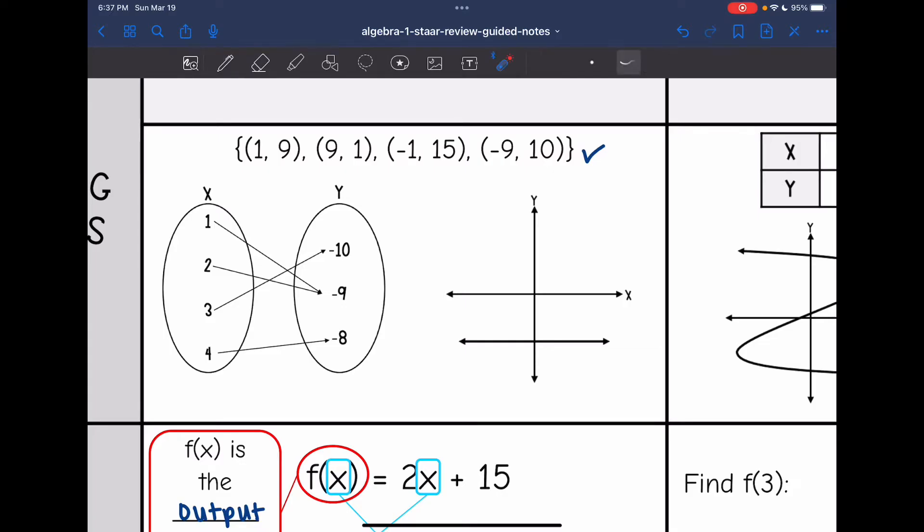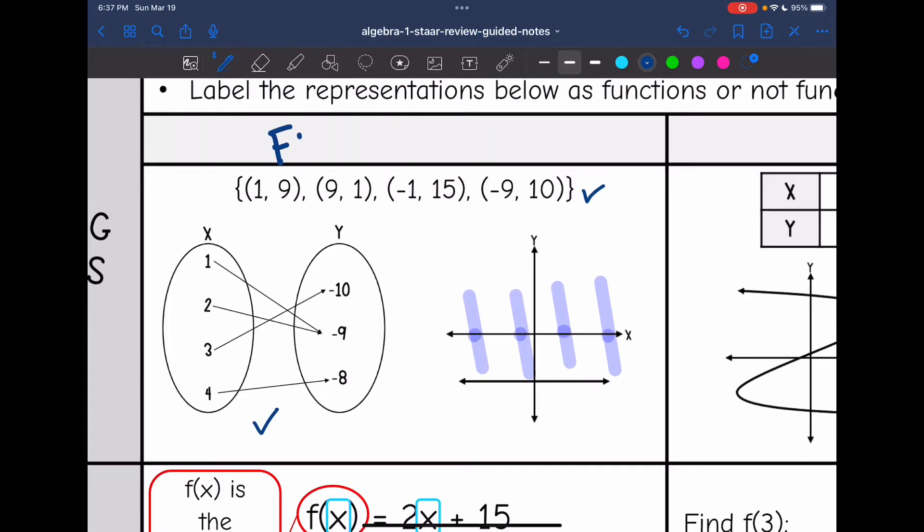On the mapping, each of the inputs only has one output, so that is a function as well. And this graph passes the vertical line test. It's only hitting the vertical line at one point across the entire graph, so these representations here do show a function.